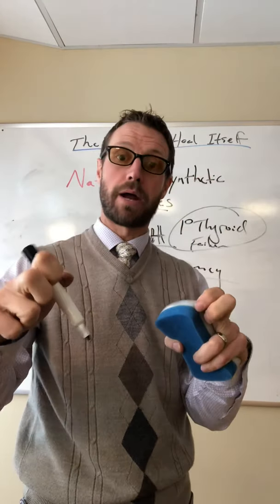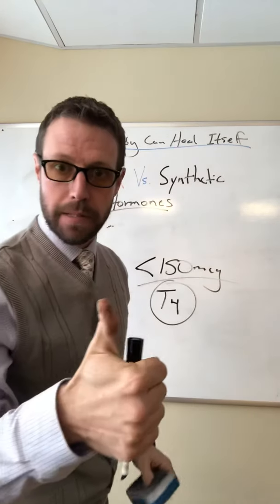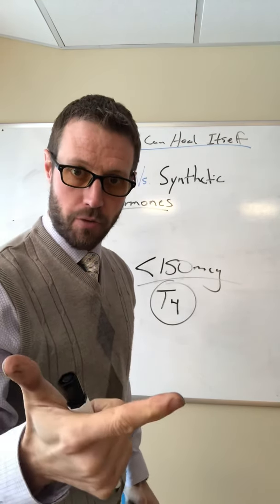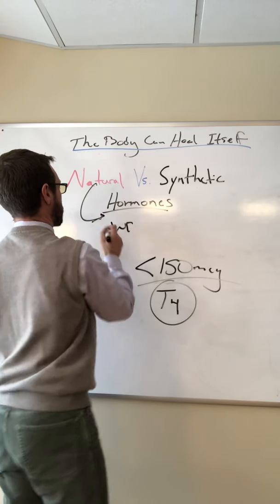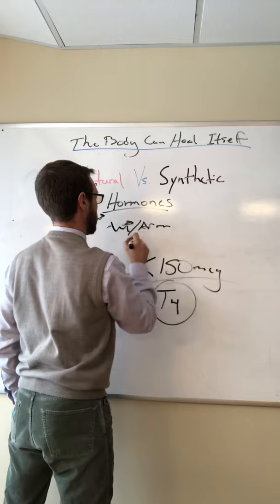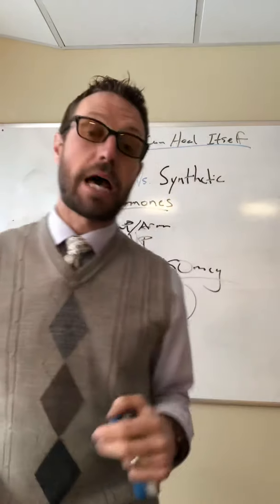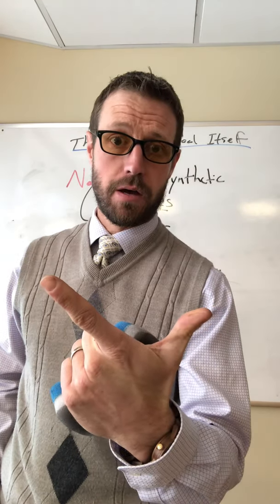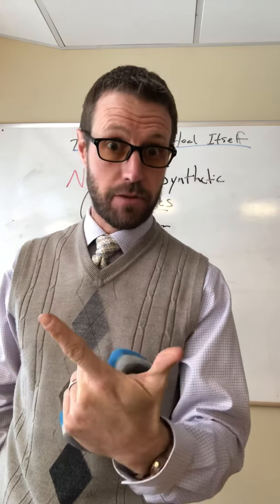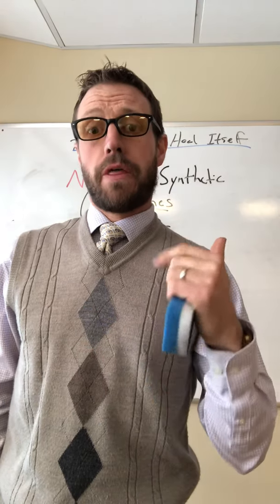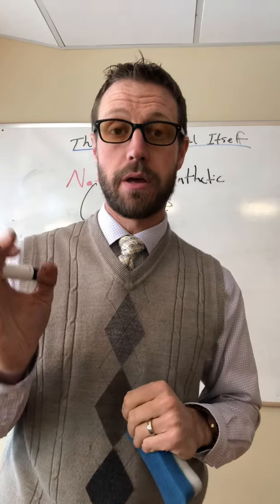And then of course, there's the quote-unquote natural. So the natural, guys, that's going to be your WP armor, Nature-throid armor. So we're talking about natural: WP, armor, Nature-throid. Those are the different forms of the natural. Now, that comes with T4 and T3. Meaning that you get levothyroxine, you're getting triiodothyronine, you're getting T4 and T3. So that can be more beneficial, especially if people are a slow and sluggish converter of T4 into T3.